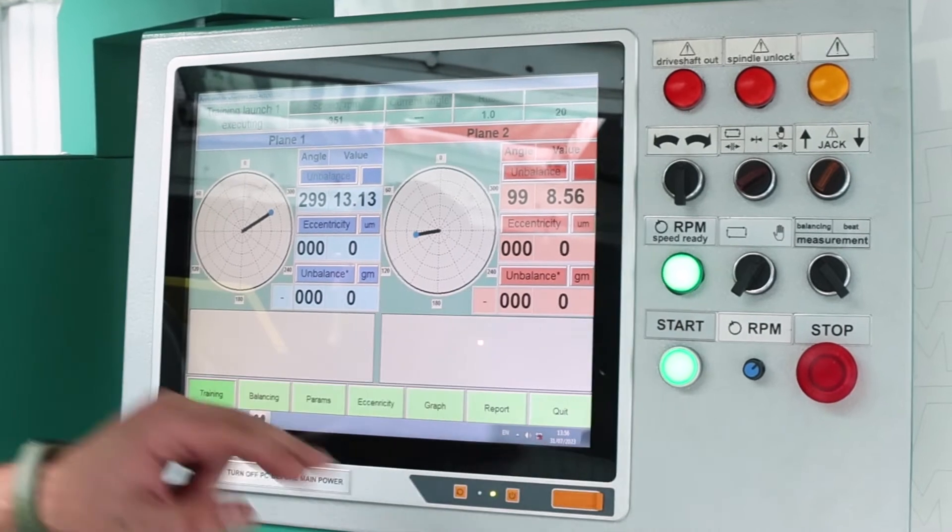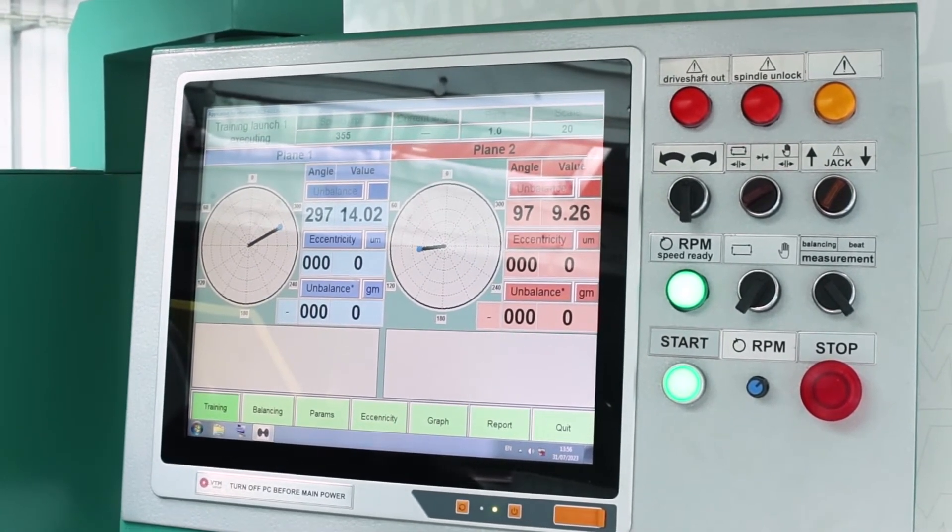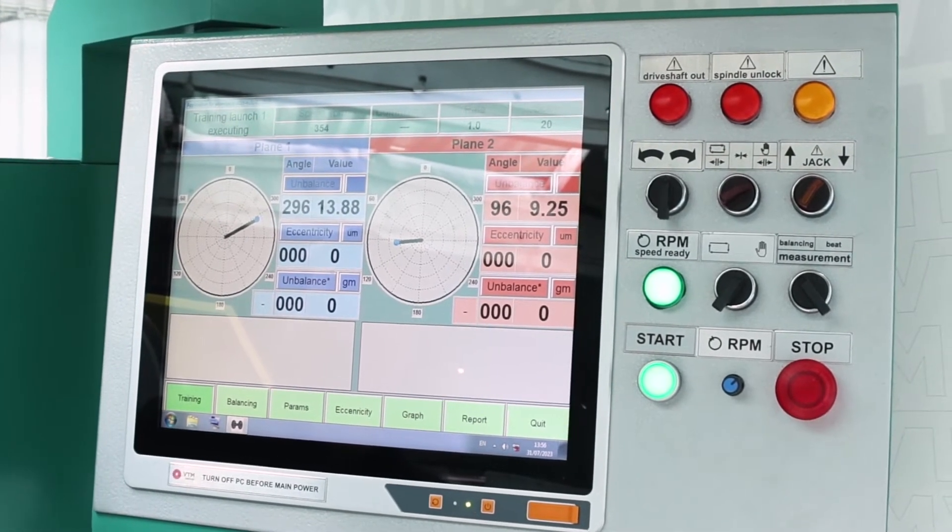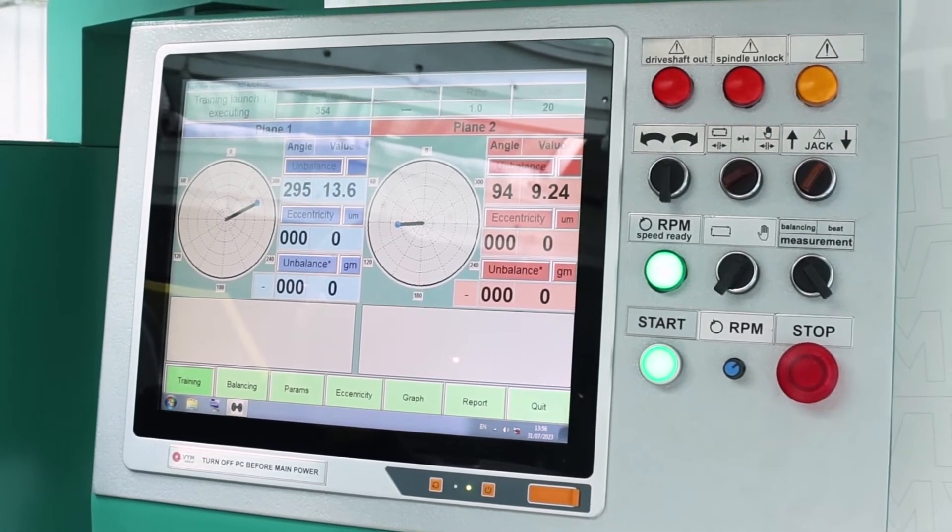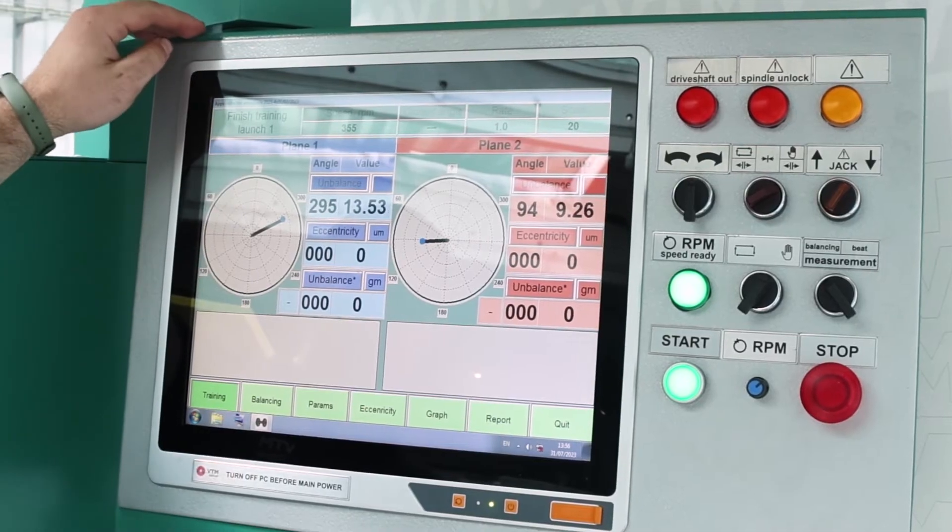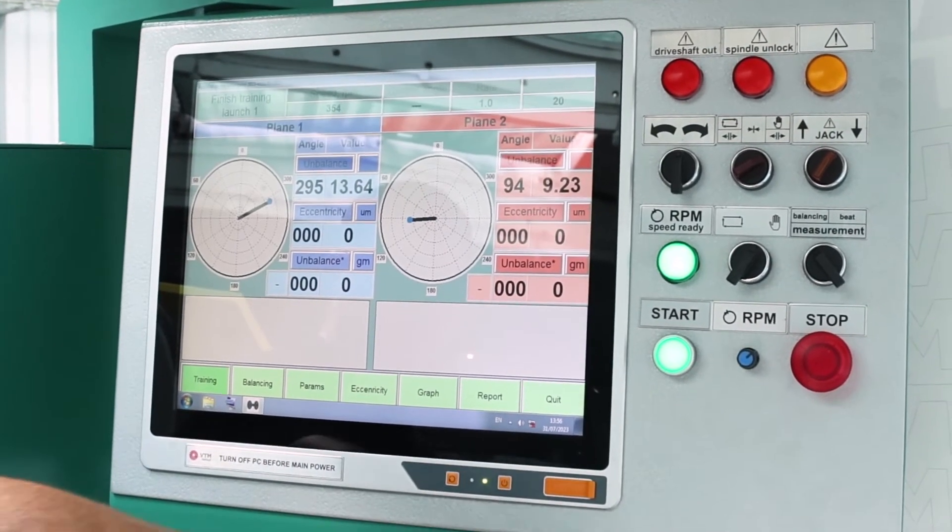The speed has been reached, there is a measurement with a weight on the first plane. We receive permission to stop the measurement. We look at the stability of the angles of the magnitudes and stop the rotation.